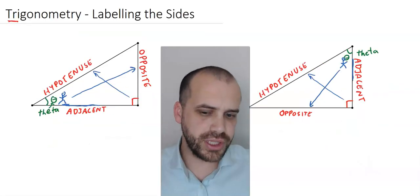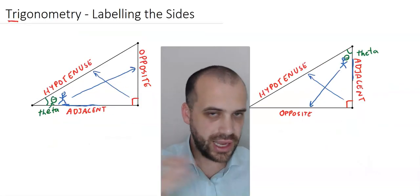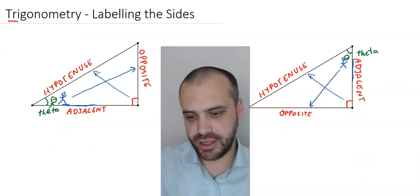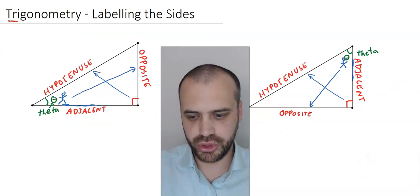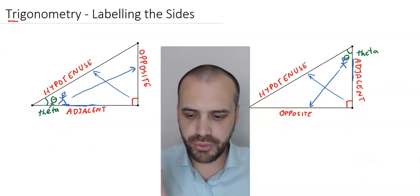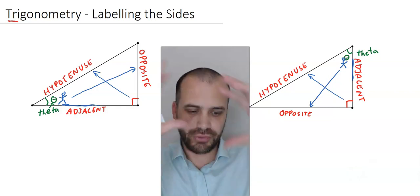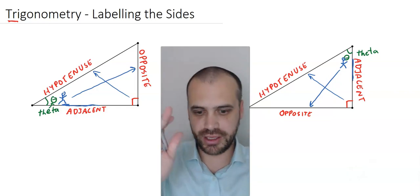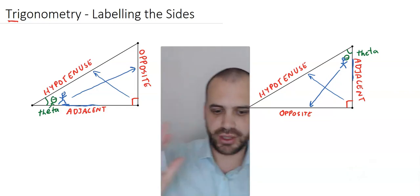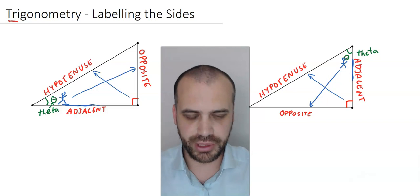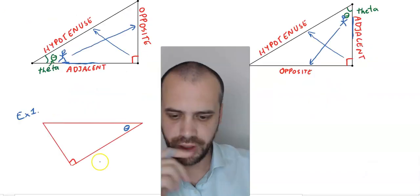That's really all you need to know about labeling the sides in right angle trigonometry. But I want to show you a couple more triangles that are rotated and flipped the other way so we can practice labeling these sides.